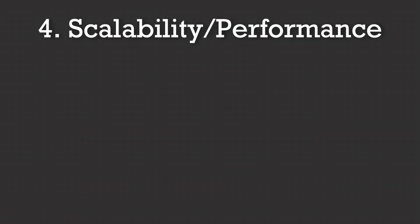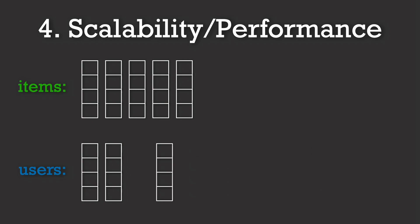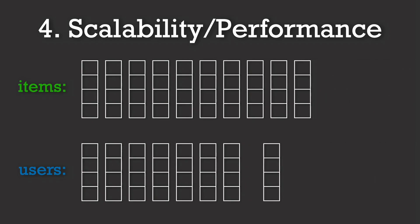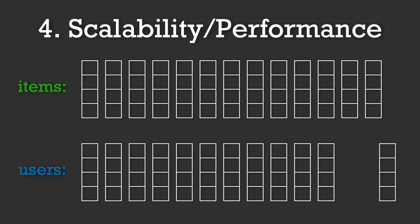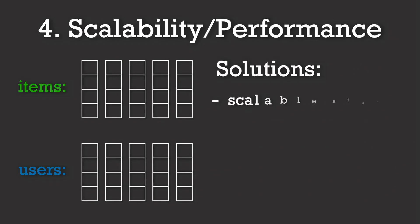And finally, scalability and performance. As platforms grow, computing personalized recommendations for millions of users in real-time becomes a serious challenge. Efficient algorithms, like approximate nearest neighbors, can speed up similarity searches.